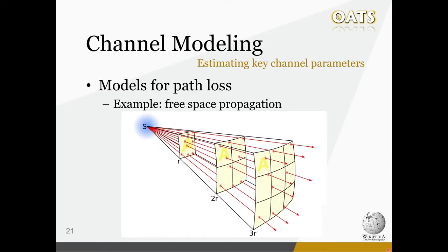Blockage is probably the most intuitive way to describe communication link status, but it is often too simplified, because we may still be able to get robust communication via a blocked link, or we may not be able to communicate at all even with a clear path because the transmitter and receiver are too far away from each other. So in our work, we also considered path loss as a complementary way of investigating the link condition.